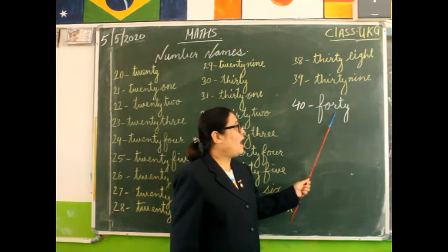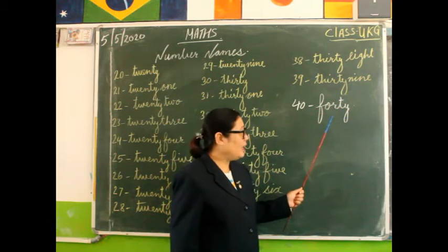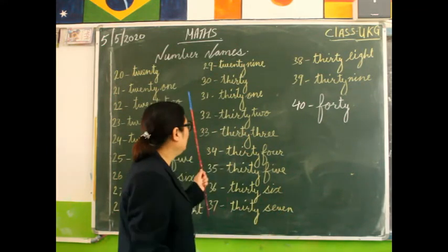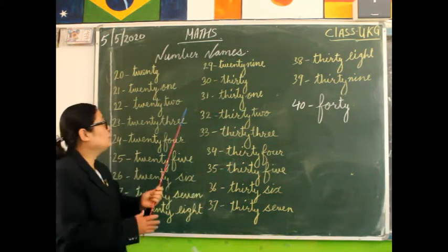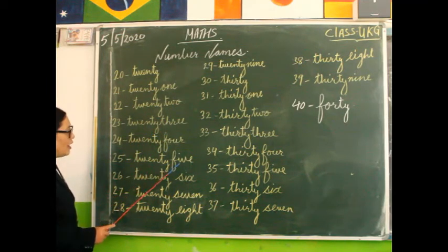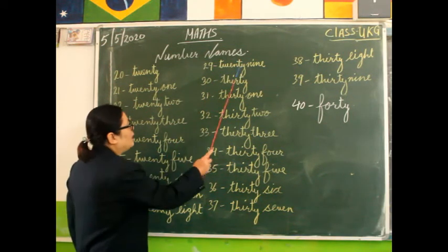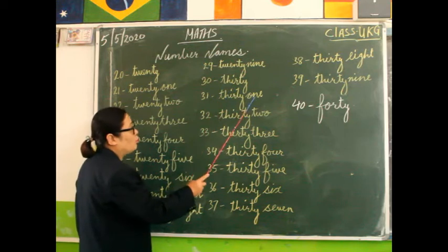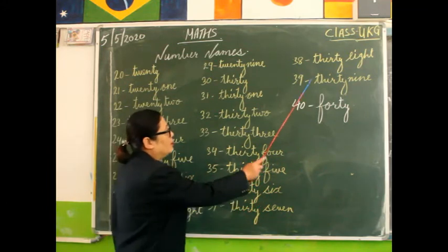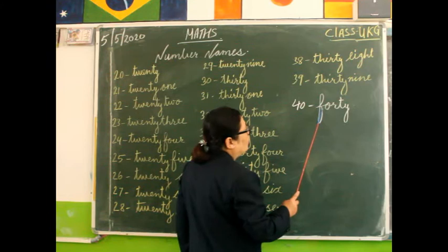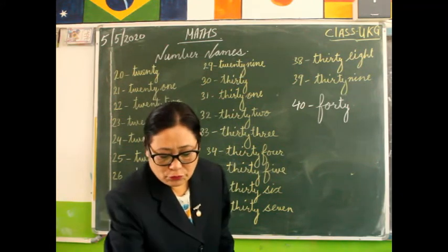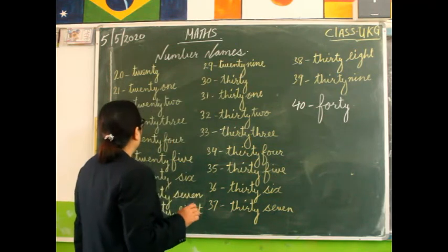F-O-R-T-Y, 40. These are the number names from 22 to 40. Again children, I want to tell you when you're writing in your copy, see.